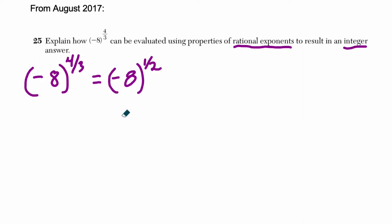I'll just rewrite that. I need some more room. So it's going to be negative 8, in parentheses, around the negative 8. Take that whole thing to the 3rd root, and then take all of this stuff to the 4th power.